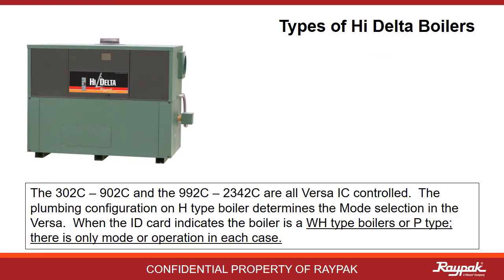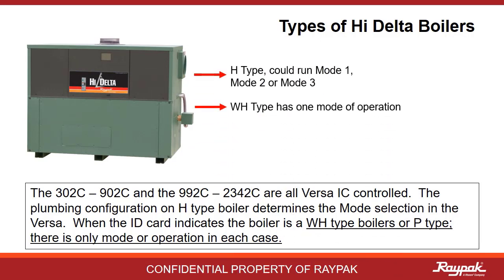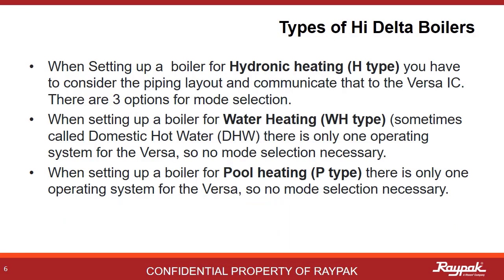When ordering a high-delta boiler, you can order it as a hydronic heater or H-type, a water heater or WH-type, or a pool heater or P-type. The ID card inside the unit indicates what kind of a boiler it is. When ordering a hydronic heater, there are three possible ways to set it up. These are called modes and are effectively operating programs for the boiler. If the appliance has a water heater ID card, then it is a water heater, and there is only one mode of operation.